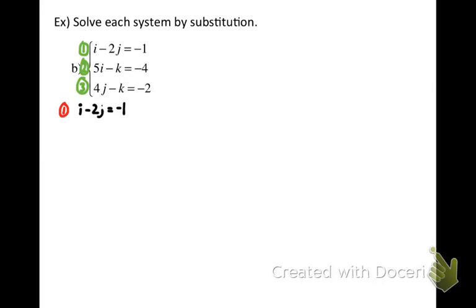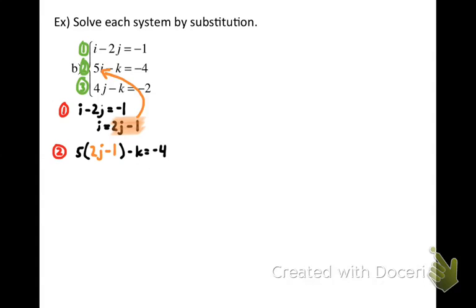Let's pick the variable that looks easiest to isolate — certainly i in the first equation looks easiest. Let me copy that equation down. If we add 2j to both sides, we get i equals 2j minus 1. Now we take that quantity 2j minus 1 and substitute it into each of the other equations. Let's first substitute into the second equation where we have 5i minus k equals negative 4. I've replaced the i with 2j minus 1, multiplied by 5, giving 10j minus 5 minus k equals negative 4.